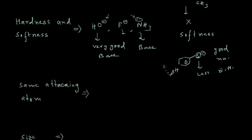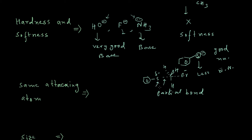In an SN2 reaction, we know that in the transition state the attacking nucleophile undergoes partial bond formation. This partial bond formation can only occur if the atom possesses high polarizability. Due to high polarizability, it can easily share its outermost electrons to form a partial bond in the transition state. So high polarizability is a very essential criterion for any nucleophile to show high nucleophilicity.